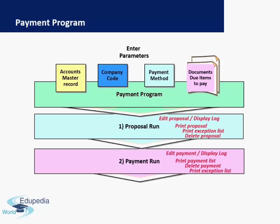Once these parameters are entered and saved, we then have to run a proposal. A proposal is basically a trial run which gives you an idea of the different vendor invoices that are going to be paid and the total amount. You can also edit this proposal and choose to block or unblock any specific invoices. You can display a log of all the different invoices and amounts. Finally, you can also delete the proposal if you want to make any changes in the first step for entering additional parameters.